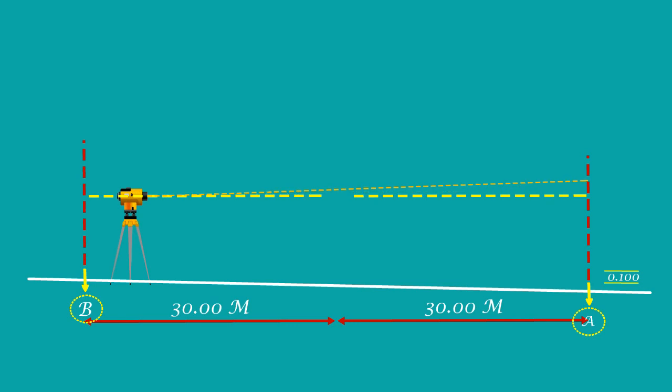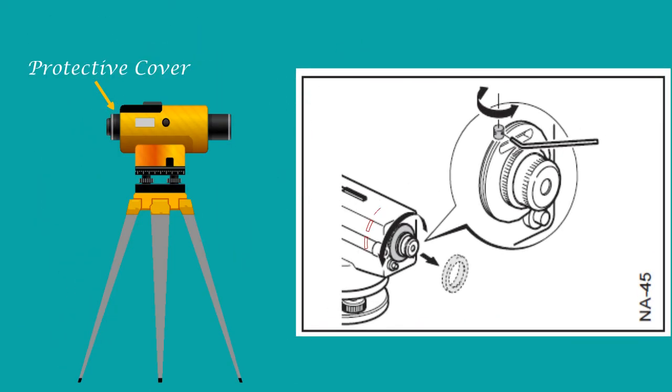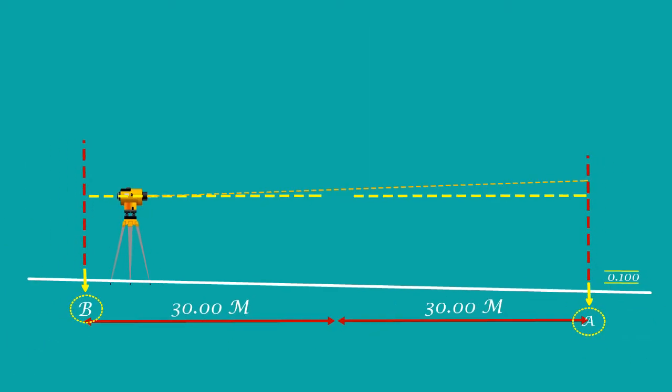In case there is error and the difference is more than two millimeters, then we have to adjust the instrument. Screw off the protective cover on the eyepiece, turn the adjusting screw until the horizontal hair gives the correct staff reading, the difference of 0.10 meter, and screw on the protective cover. Repeat the checking procedure one more time and make sure the instrument is perfect.